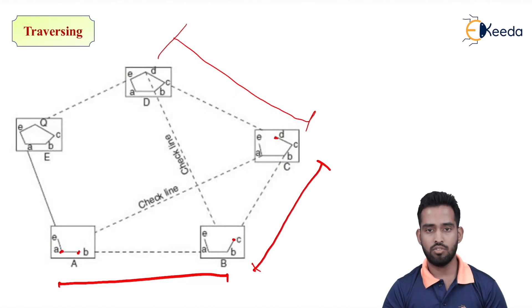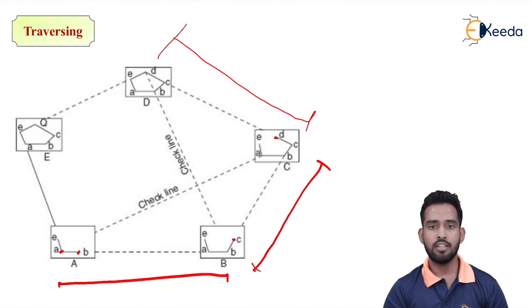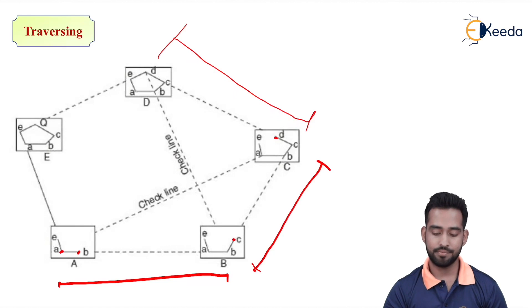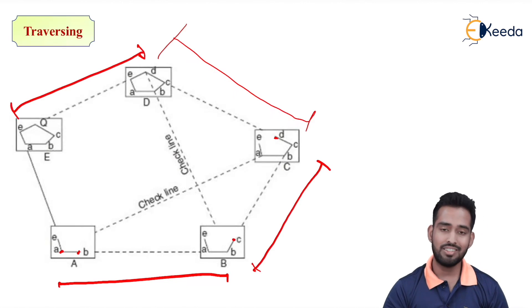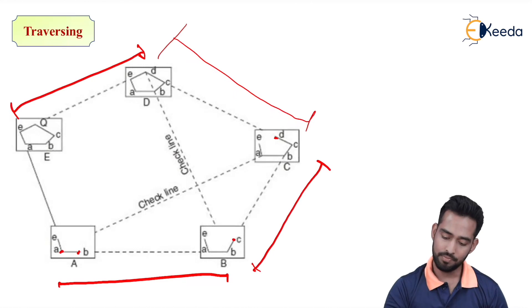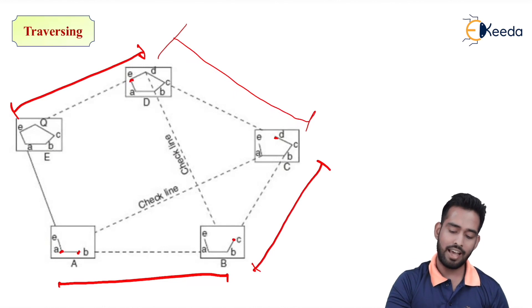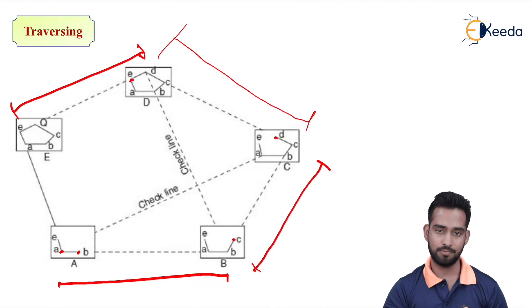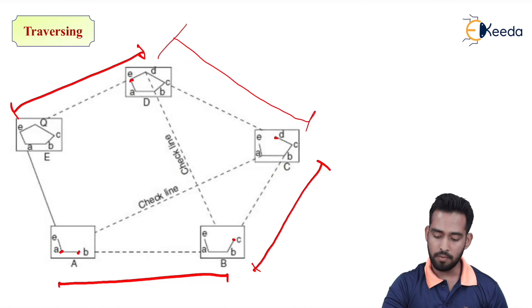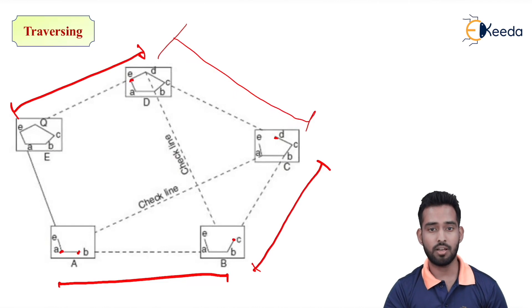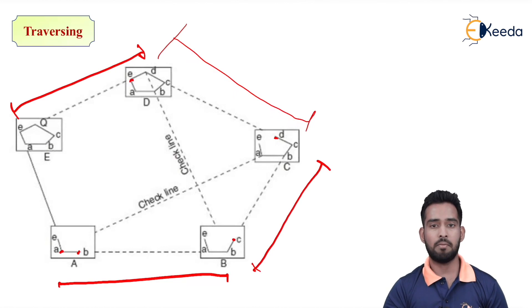After plotting point D, shift the instrument to point D. Do proper centering, orientation, and all the temporary adjustments. From D, draw a ray towards the last point, that is point E. When we draw a ray towards E, it will bisect the already drawn ray from A towards E. The intersection of both rays gives us station E. We can also check by calculating the direct distance between D and E on the ground and plotting accordingly — both points should match. We can also provide a check by back-sighting the ranging rod at B. This is why in the traversing method, we get precise readings and accurate plotting.